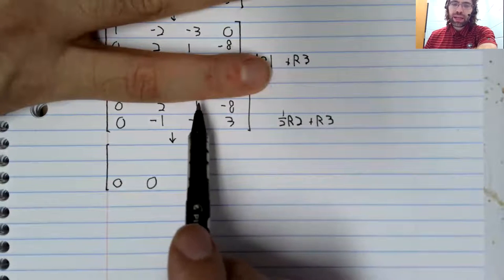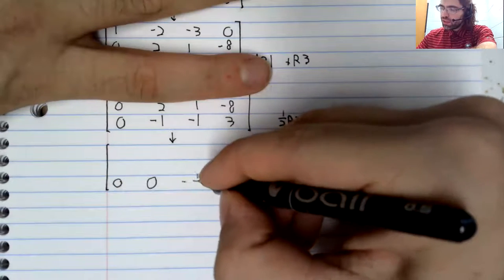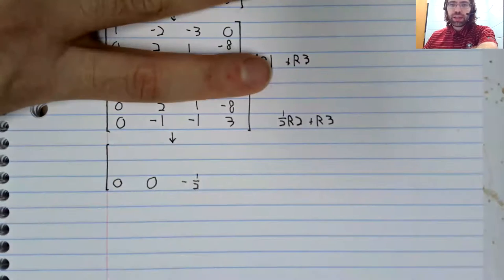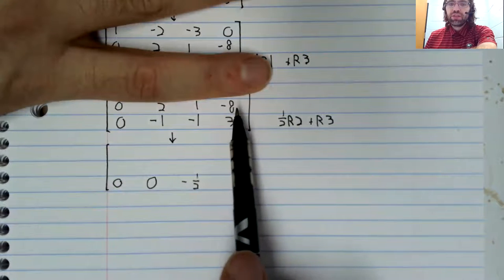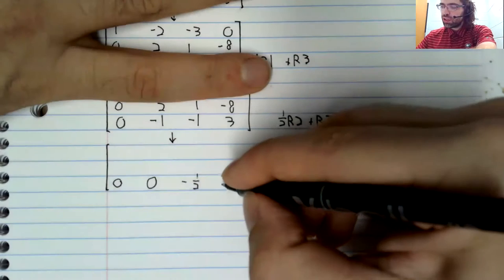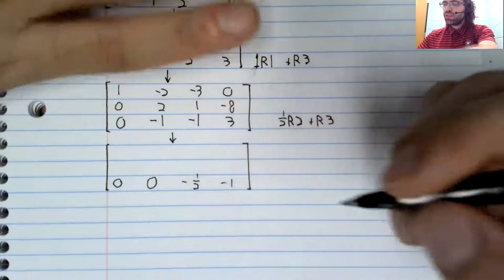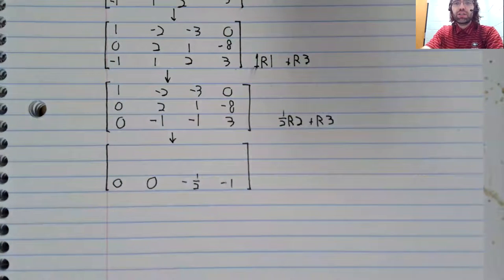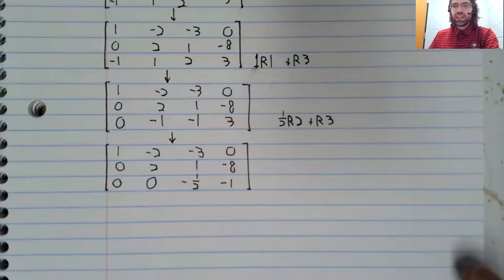It becomes one half plus negative one is negative one half. Negative eight times one half is negative four plus three is negative one. And the first and the second row remain unchanged.